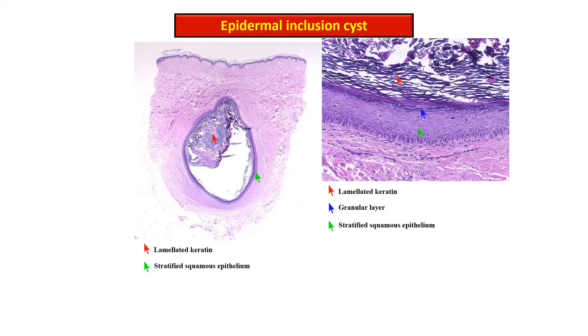The high power view shows that the lining of this cyst is a stratified squamous epithelium with an intact granular layer, and the luminal side is showing the laminated keratin.